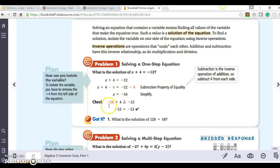I can check to make sure that I'm correct by plugging in this negative 16 for X. So negative 16 plus 4 does in fact give me negative 12. Negative 12 equals negative 12.